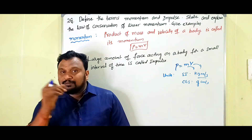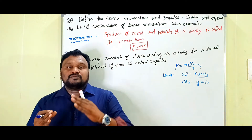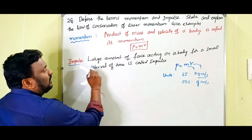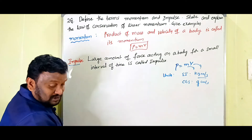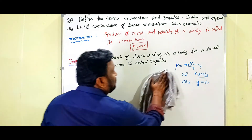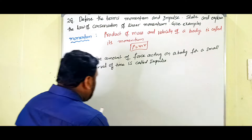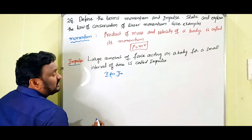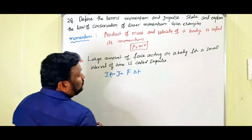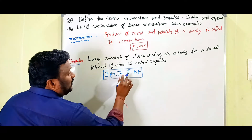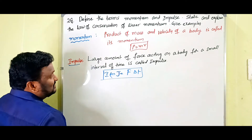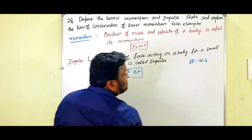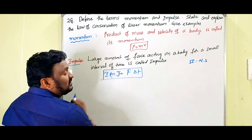The product of force and time interval is also called impulse. Impulse is given by J = F·ΔT — that is, the product of applied force and time interval is what we call impulse. The SI units are Newton·second.